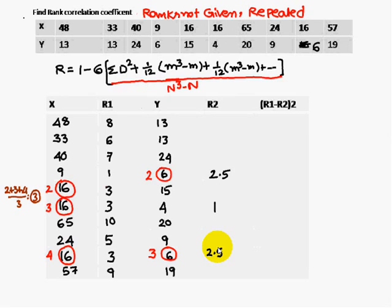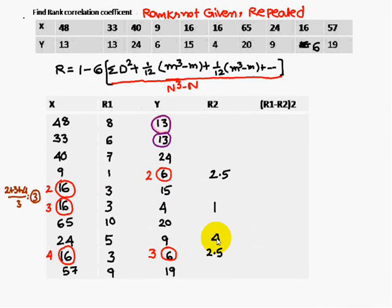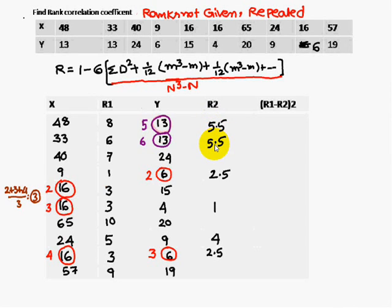After 6, the next value is 9, which gets rank 4 since ranks 2 and 3 are used up. Then there are two 13s; they would take ranks 5 and 6, so the average is 5.5. Both 13s are assigned rank 5.5, completing the 6th rank.